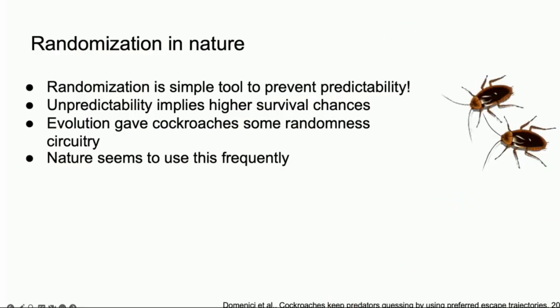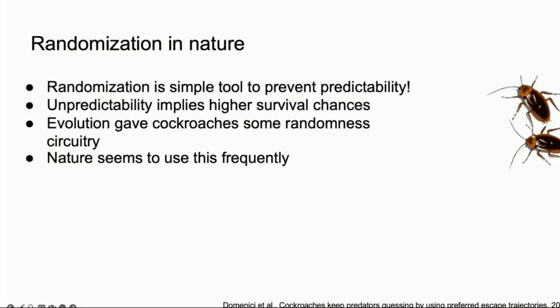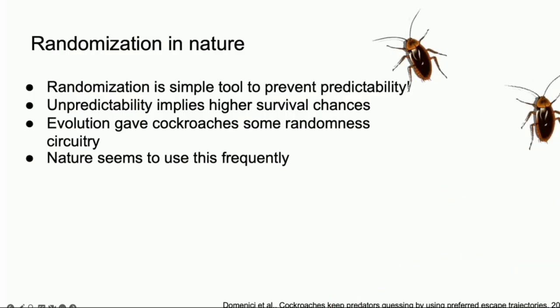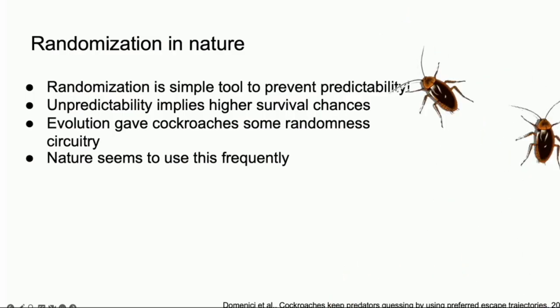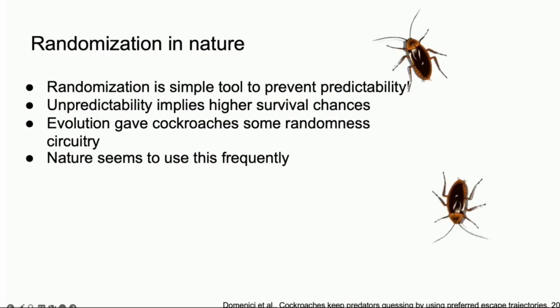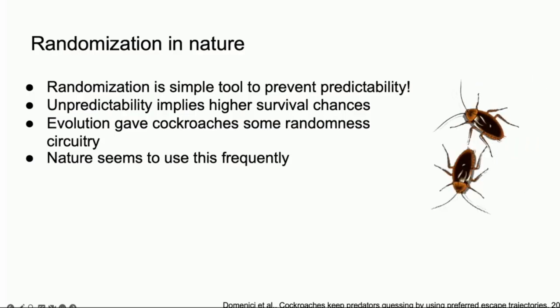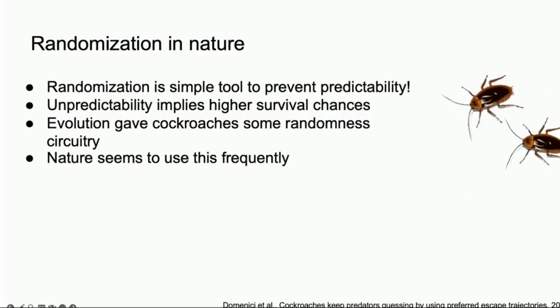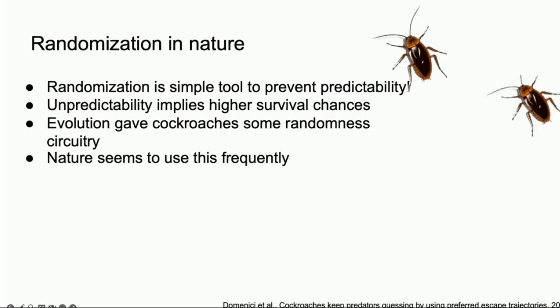A little bit about the motivation of this work. Randomization is a simple tool to prevent predictability, and predictability in nature implies higher survival chances. You can see this with cockroaches - they have a very erratic way of moving which makes it very hard for us to catch them or for a bird.